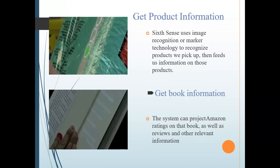Get Book Information: The system can project Amazon ratings on a book as well as reviews and other relevant information.